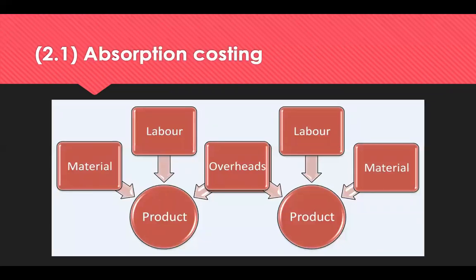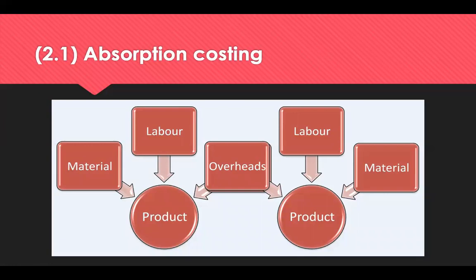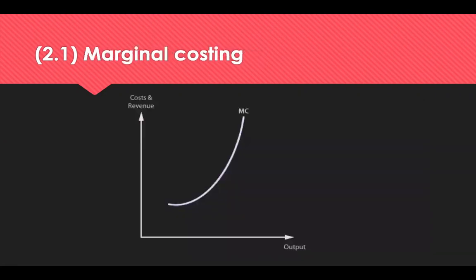Under absorption costing, the costs absorbed into direct costs include direct labour, direct materials and overheads — indirect costs relating to manufacture and operation. Under total absorption costing, all overhead costs such as rent, rates, premises and head office administration are fully recovered by being incorporated into the costs of the products created. This is a relatively arbitrary method of linking overhead costs to a product or service, but it does ensure that all relevant costs are fully absorbed across individual products.